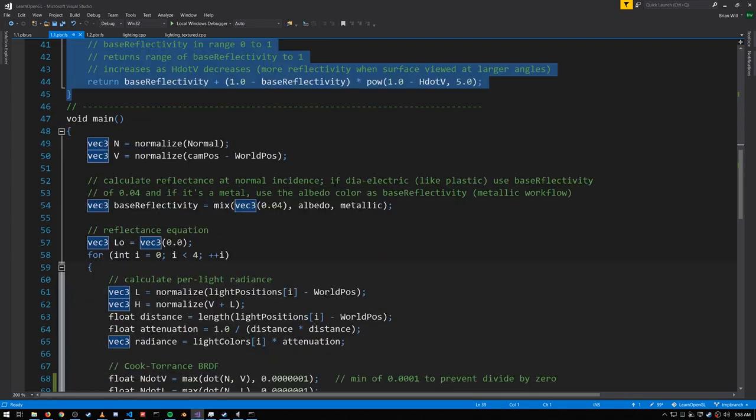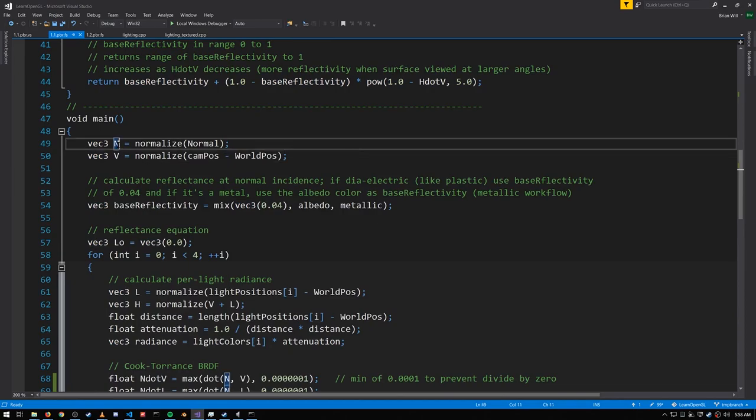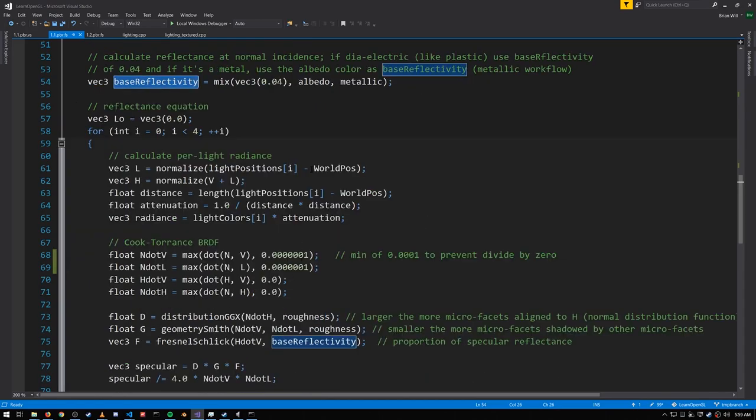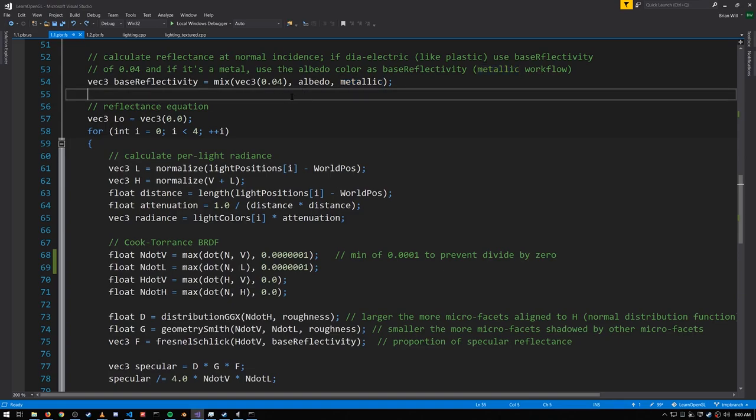We'll call these functions from main, which starts by computing the normal and the view vector. We also get a base reflectivity, which we're going to feed into the Fresnel function. The built-in mix function interpolates between two values, a start and end value here, VEC3 of 0.04 and albedo another VEC3. And when metallic is 0, we get the start value. When it's 1, we get the end value. So as our metallic parameter gets closer to 1, the more our base reflectivity is going to match the albedo.